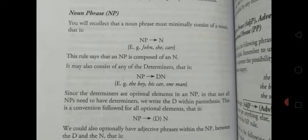It may also consist of any of the determiners, that is noun phrase arrow determiner noun. For example: the boy, his car, one man.